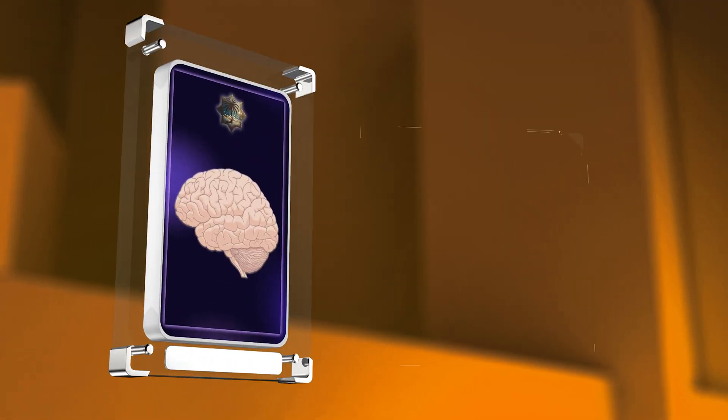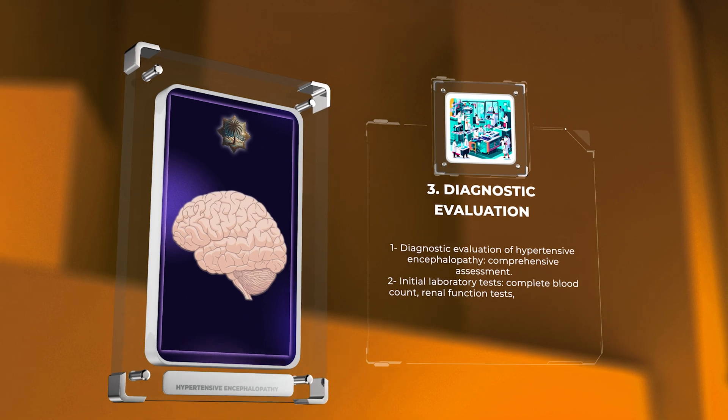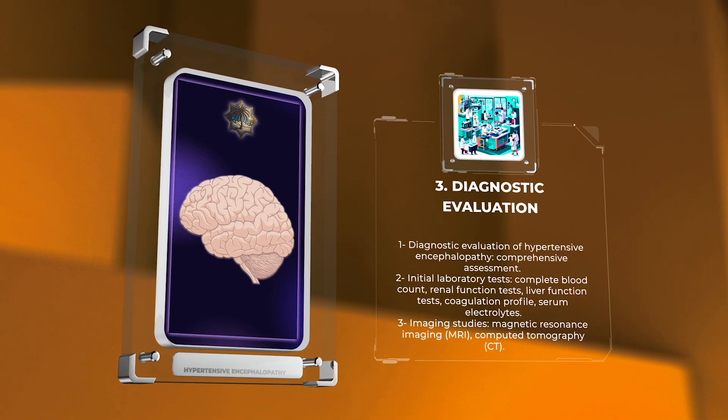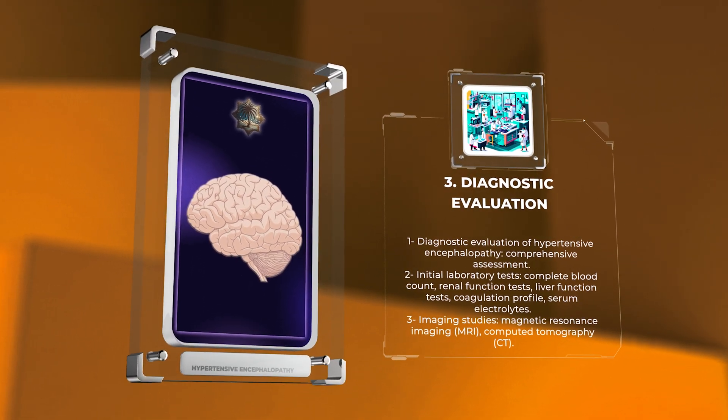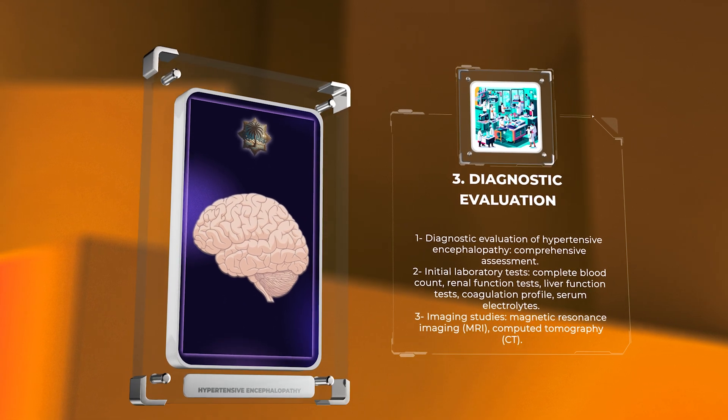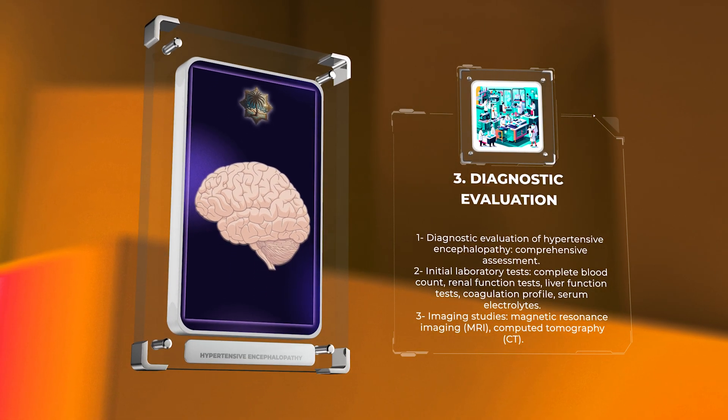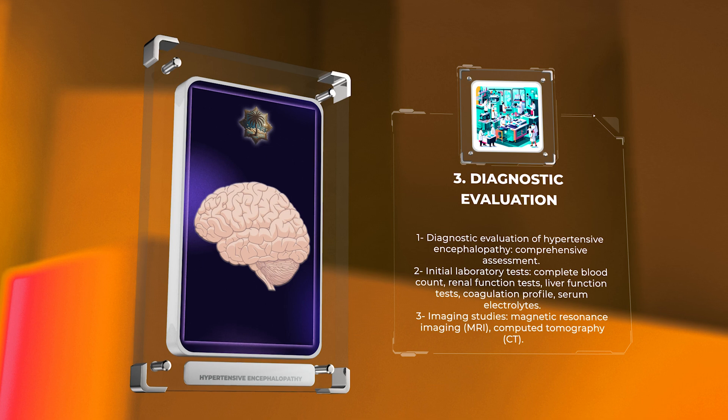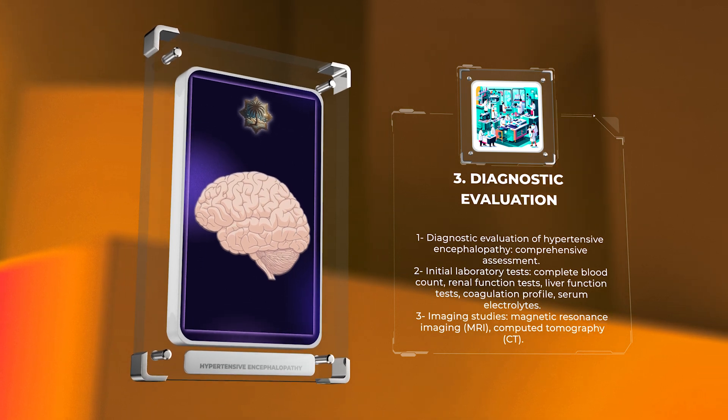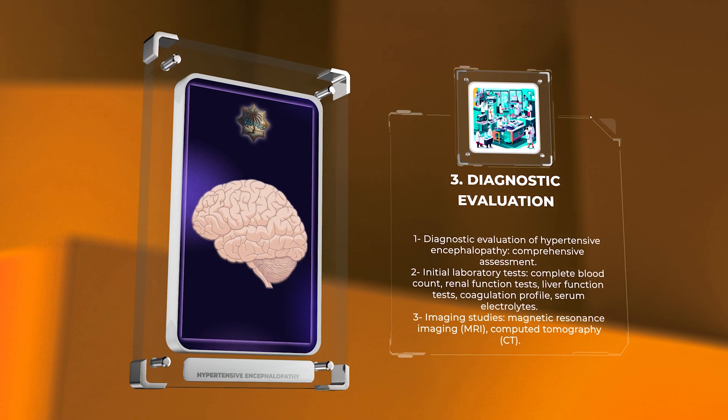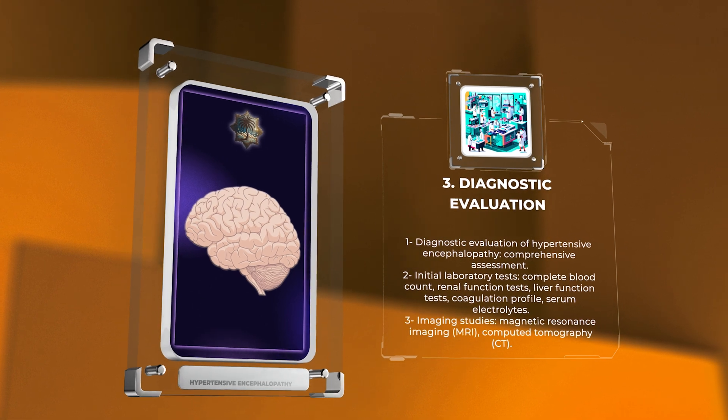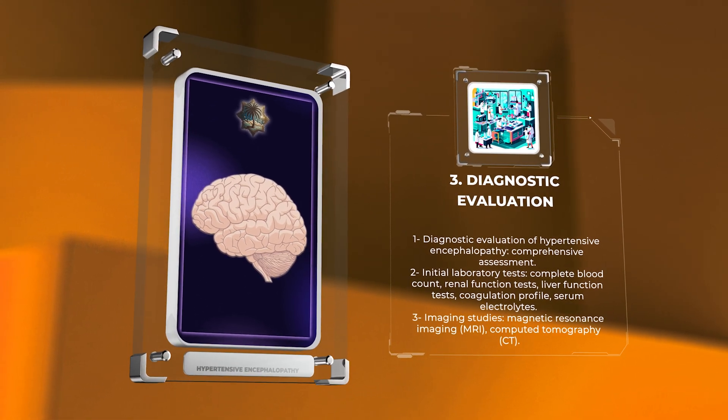The diagnostic evaluation of hypertensive encephalopathy involves a comprehensive assessment to exclude other potential causes of neurological symptoms. Initial laboratory tests may include a complete blood count, renal function tests, liver function tests, coagulation profile, and serum electrolytes. These tests help assess end-organ damage and evaluate for possible underlying conditions contributing to hypertension.